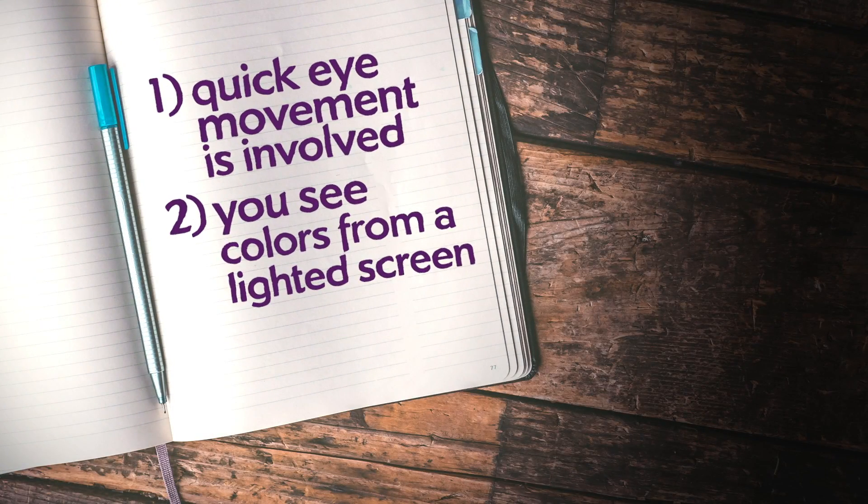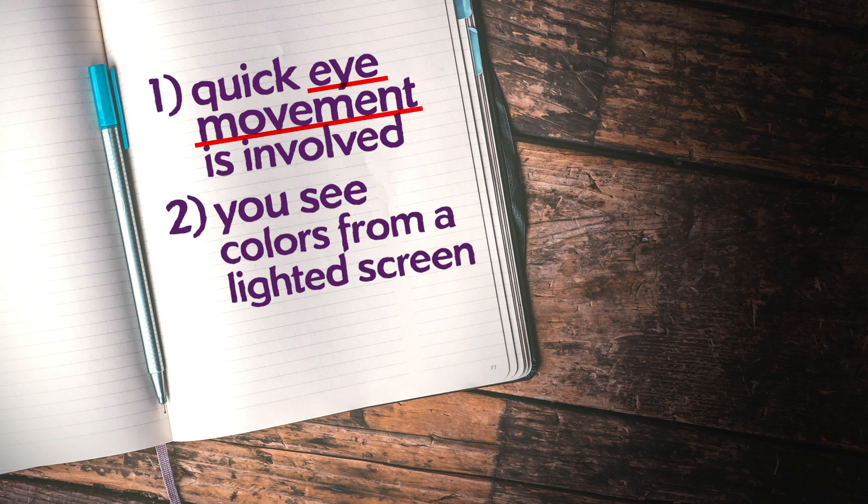Clue number one: it happens when you move your eyes quickly - while looking away, while blinking and looking away, or looking past something. Clue number two: it happens when there's some kind of lighted screen - projector, LED displays, etc. Those are the clues we're working with to try and figure out what's going on. Adults will call them observations; I call them clues.